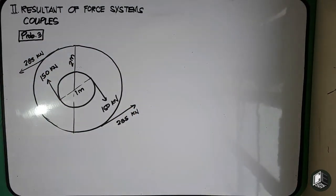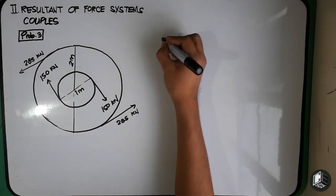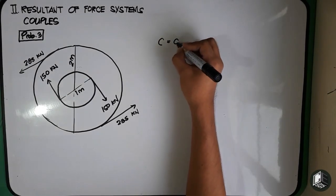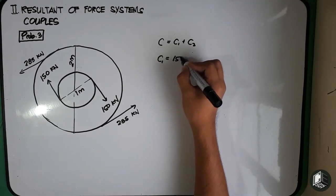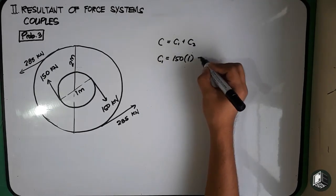So yung overall couple natin is equals to C1 plus C2, where C1 is equals to positive 150 multiplied by one meter and this is equal to 150 kN meter.